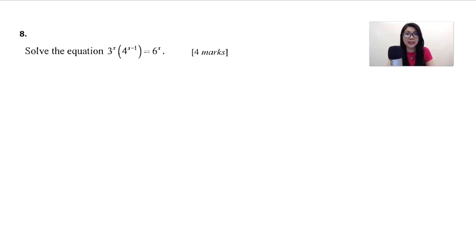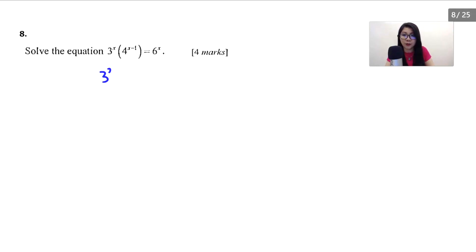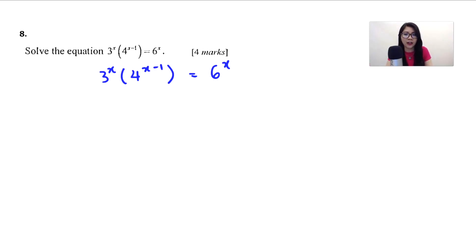Let's look at question number 8. This is a question under the chapter indices. Solve the equation: 3^x times 4^(x−1) equals 6^x. This is 4 marks. For this, we must be good in indices, especially in changing the base. Let me write down the question: 3^x bracket 4^(x−1) equals 6^x. Do we need to use the logarithm method? No need — let me show you.